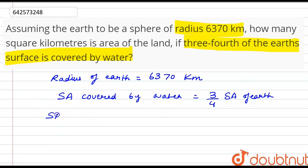We need to calculate the surface area covered by land. That will be 1 minus 3/4 of Earth's surface area, which equals 1/4 the surface area of Earth.